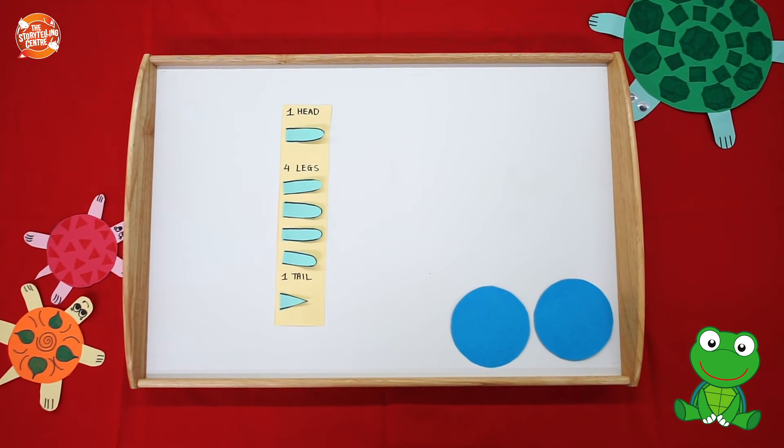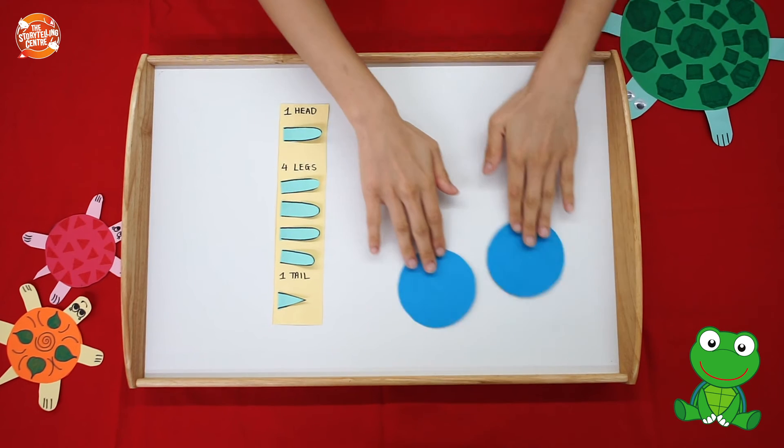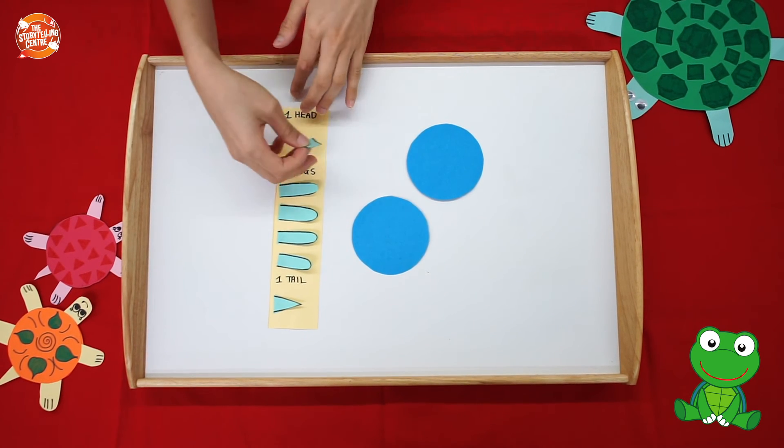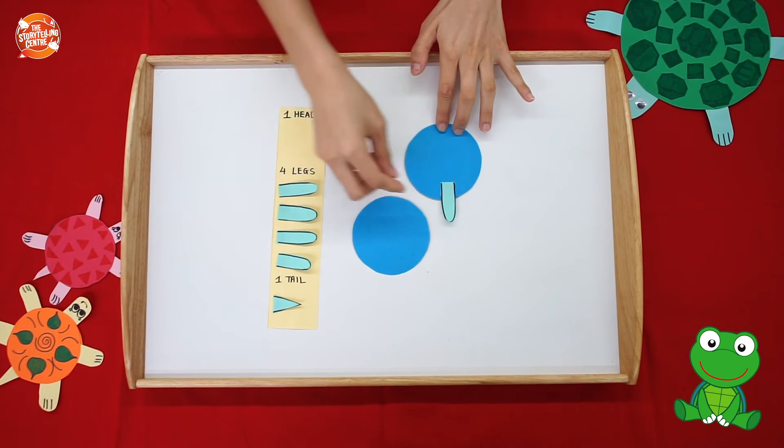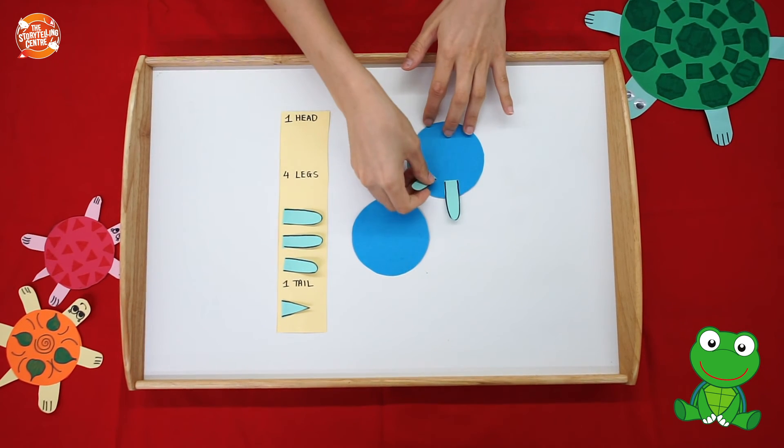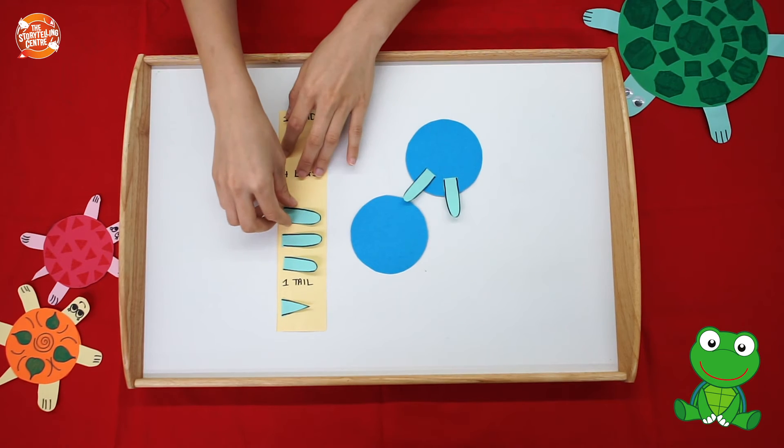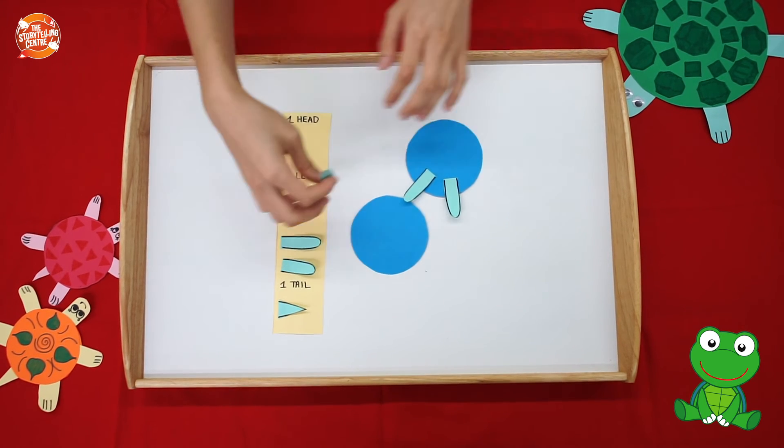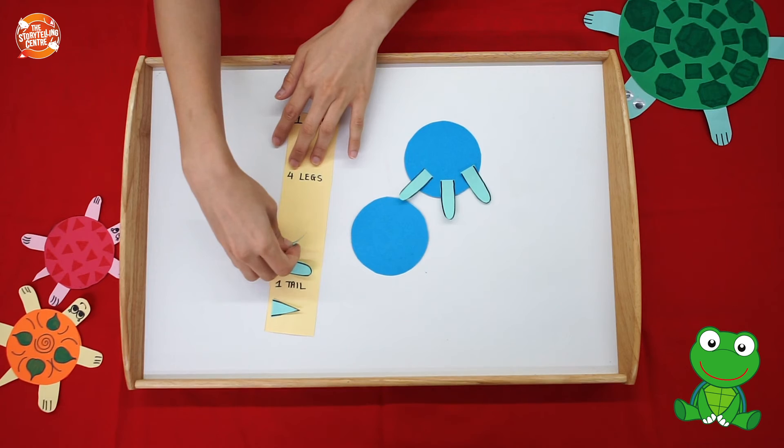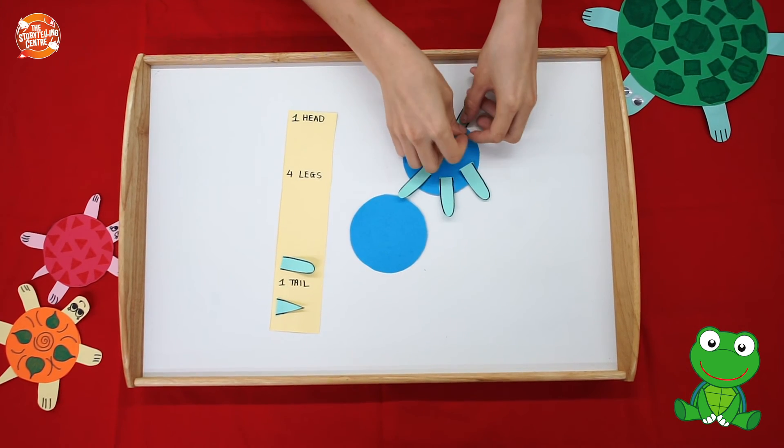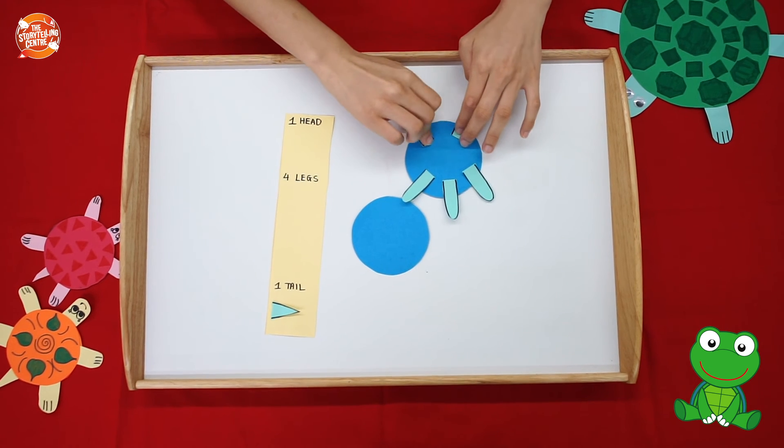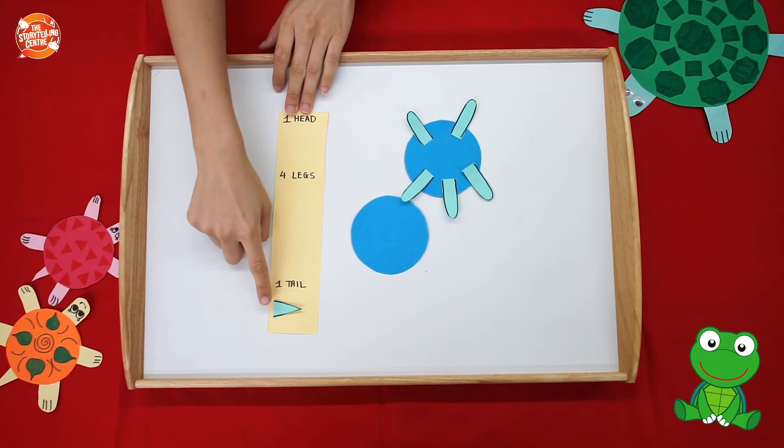Now once you have cut all of those out, let's take our circles back and let's stick the head on top like this. The four legs on the side like this. One over here, one on the other side, one at the bottom, and one on the other side. And don't forget the tail.